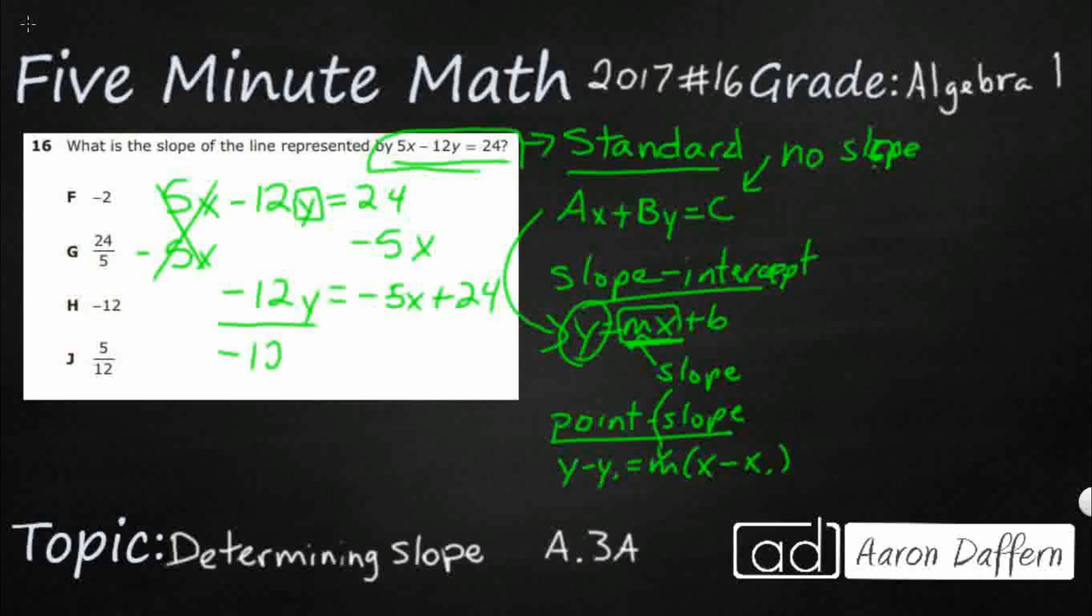So what can we do? Well, we can divide by negative 12. So negative 12 divided by negative 12, look at that, cancels itself out. Now, in order to keep a balanced equation, we need to divide both sides by negative 12.